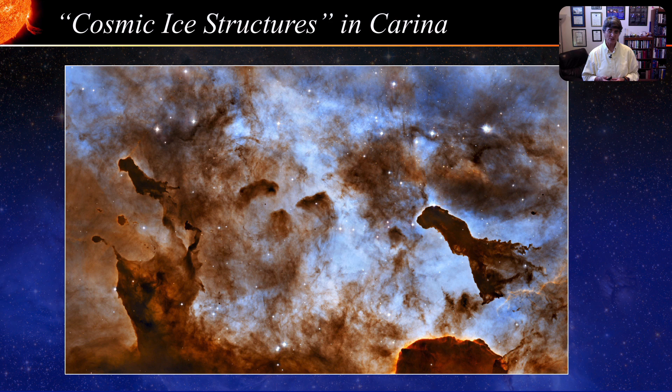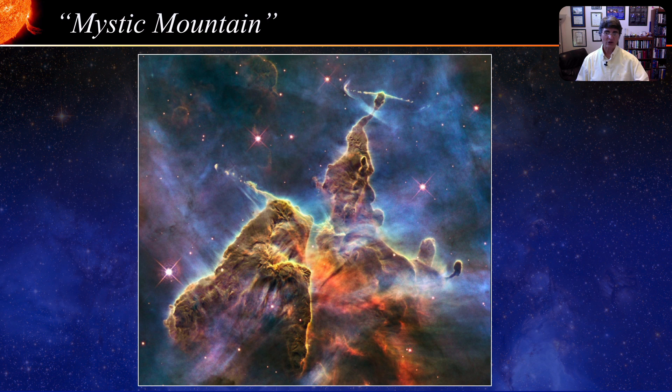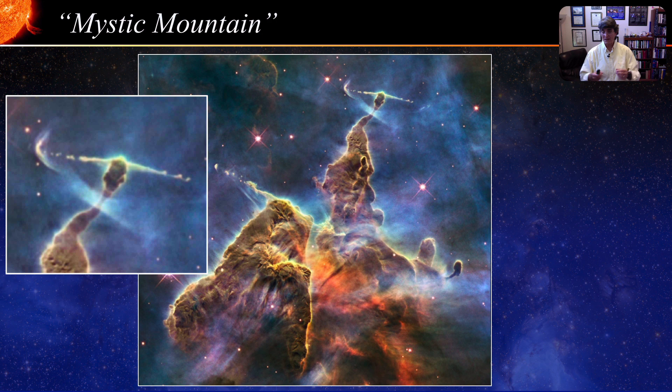The first area shows us some beautiful gas and dust pillars that look like cosmic ice structures. The second is very appropriately called Mystic Mountain. At the tip of the mountain, we can see the markers for the birth of a new star: two bipolar protostellar jets — as material falls inward toward the center of a newly forming star, most of the material falls onto the core, but some of it gets ejected out along the axis of rotation, forming these bipolar jets.